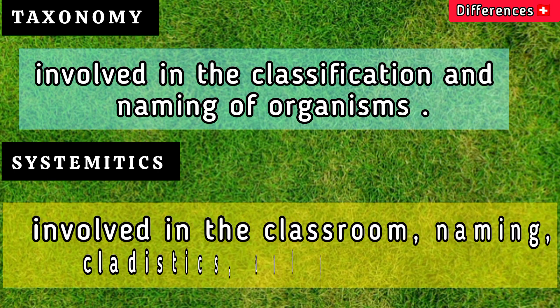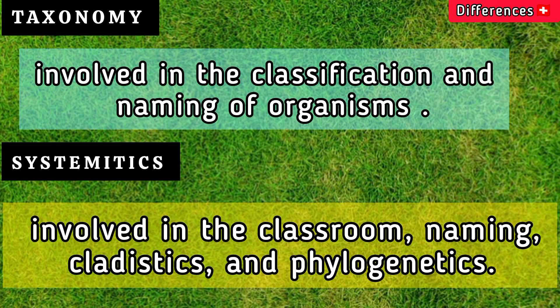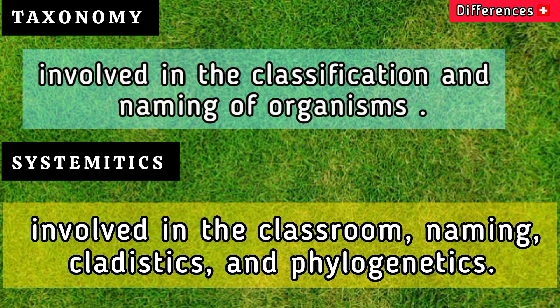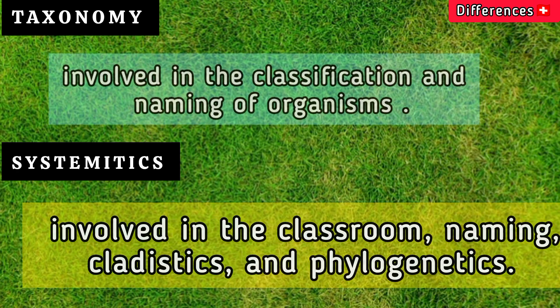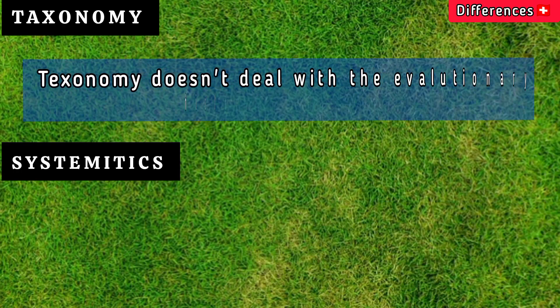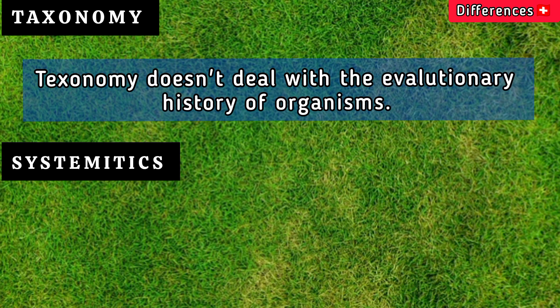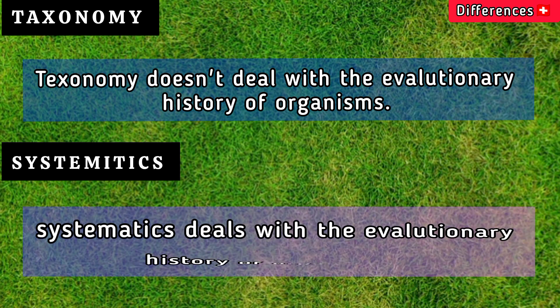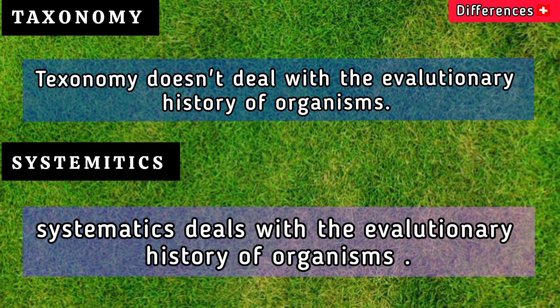Systematics is involved in the classification, naming, cladistics, and phylogenetics. Taxonomy doesn't deal with the evolutionary history of organisms, while systematics deals with the evolutionary history of organisms.